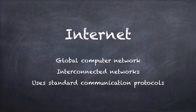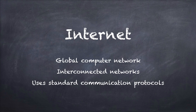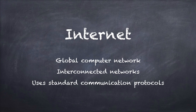The internet is defined by three main factors. First, it's a global computer network — computers connected all over the world. Some of those are computers with a person sitting behind them; some are servers sitting in a server room, serving up different web pages and services. The other key thing about the internet is that they're all interconnected, so all these networks, no matter where they are in the world, are connected and can be reached from any other point.